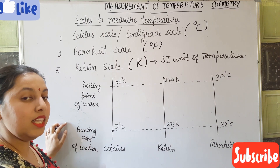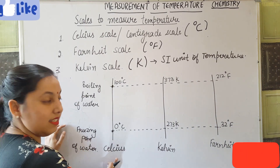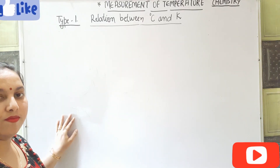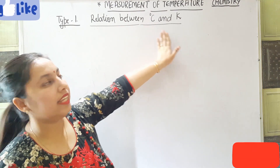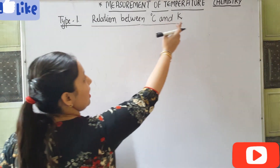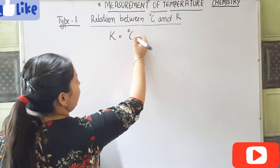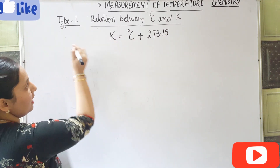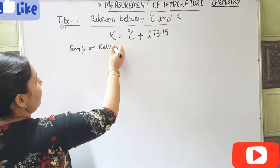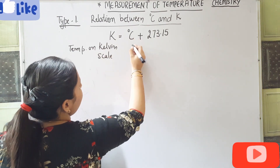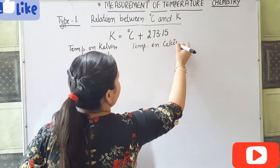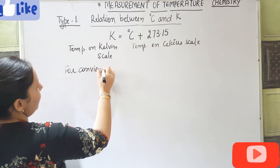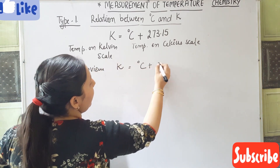Now let's discuss the relationships between these scales. The relation between degree Celsius and Kelvin is: Kelvin equals degree Celsius plus 273.15, where Kelvin is the temperature on the Kelvin scale and degree C is the temperature on the Celsius scale. For convenience, we use K equals degree C plus 273.